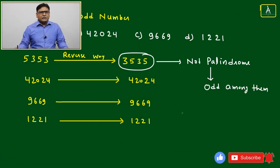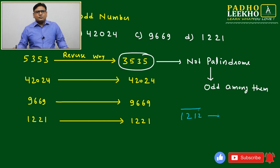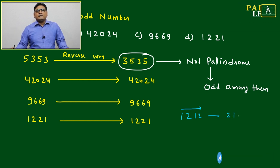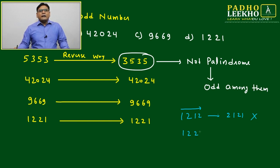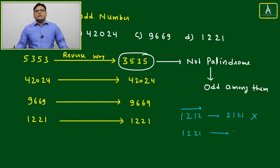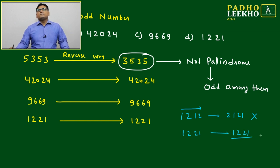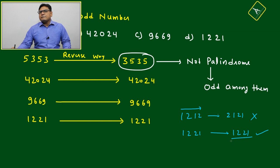For example, if you are writing 1212, from this side to that side it's 1212, but if you are writing from this side it becomes 2121. Is it palindrome? No. But if you are writing this one, then right to left and left to right, it's the same number. That is called palindrome.